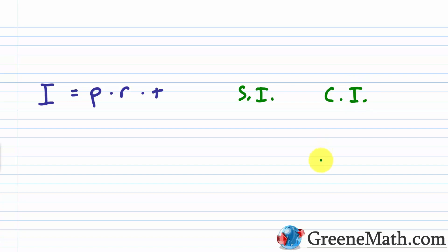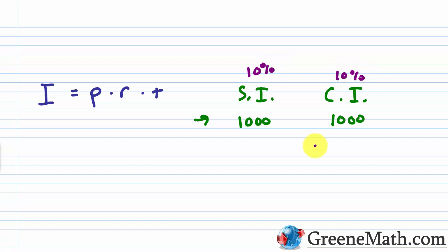Let's look at a simple example. Say the original amount invested is $1,000 — one account with simple interest, one with compound interest, each paying 10%. At the end of year one, 10% of $1,000 is $100, so the balance is $1,100. Same with compounding — no interest has been dropped in yet, so it's still $1,100.